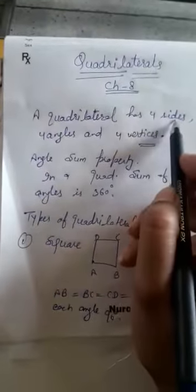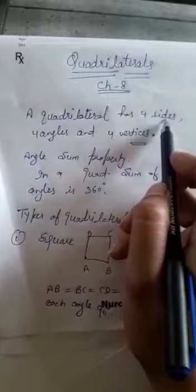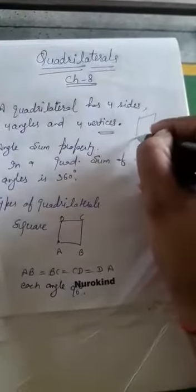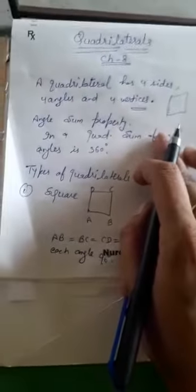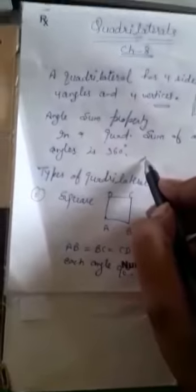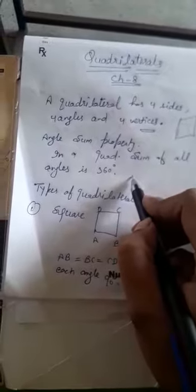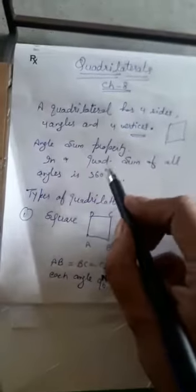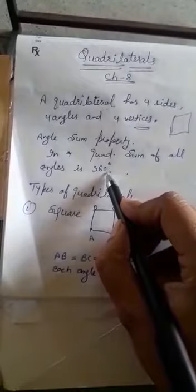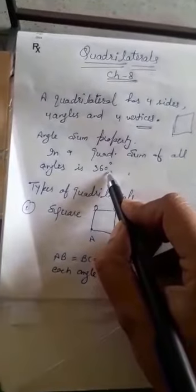A quadrilateral is a four-sided figure which has four angles and four vertices — a closed polygon of four sides. Regarding the angle sum property of a quadrilateral, in a quadrilateral there are four angles and the sum of those four angles is 360 degrees.